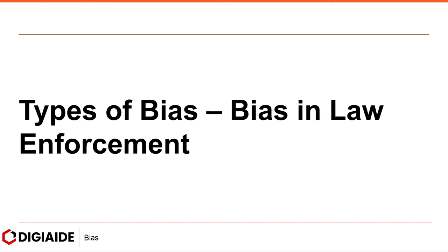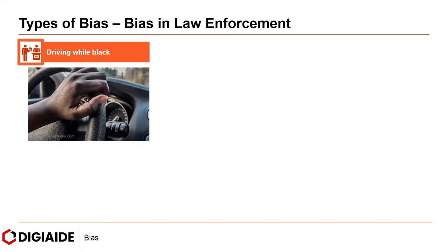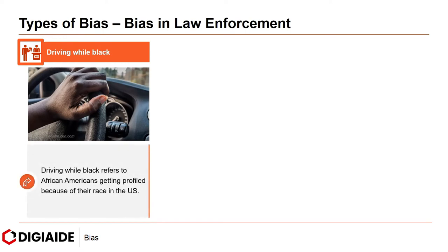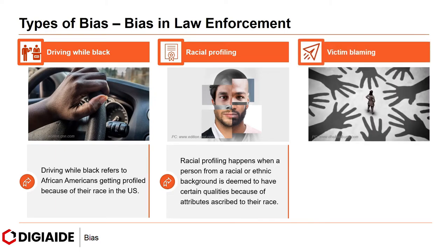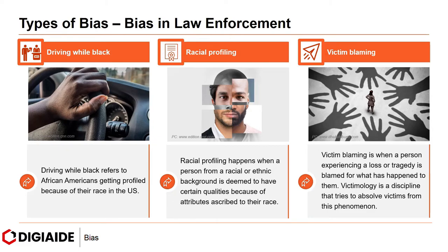Moving on to bias in law enforcement. First, driving while black. Driving while black refers to African Americans getting profiled because of their race in the United States. Next, racial profiling. Racial profiling happens when a person from a racial or ethnic background is deemed to have certain qualities because of attributes ascribed to their race — their individuality is overlooked. This is also called ethnic profiling. And finally, victim blaming. Victim blaming is when a person who experiences a loss or tragedy is blamed for what has happened to them. Victimology is a discipline that tries to absolve victims from this phenomenon.